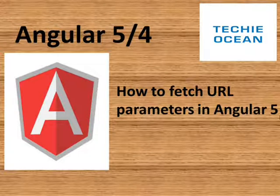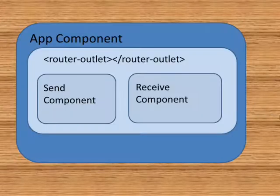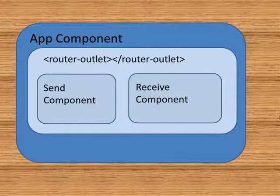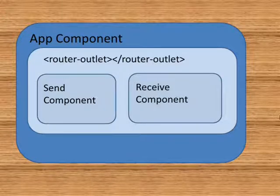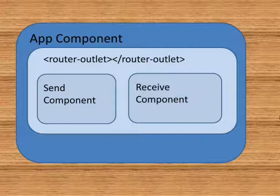Hi guys, in this tutorial we will see how to fetch URL parameters in Angular 5. We have an app component which has a router outlet and which is dynamically populating two components — the send component and the receive component — depending upon the URLs. We will see how to call the URL of the receive component from the send component for passing the parameters, and in the receive component we will see how to fetch the value of that parameter from the URL.